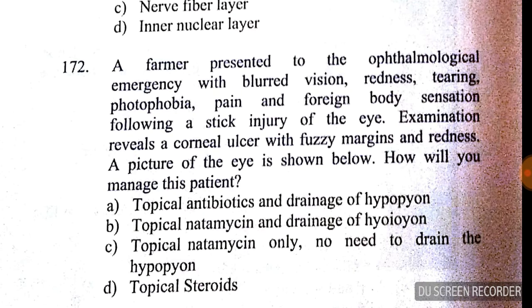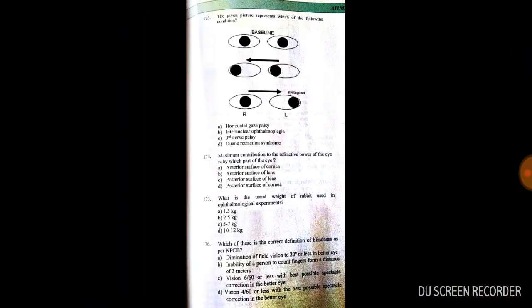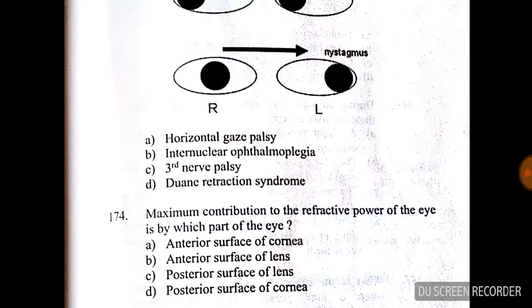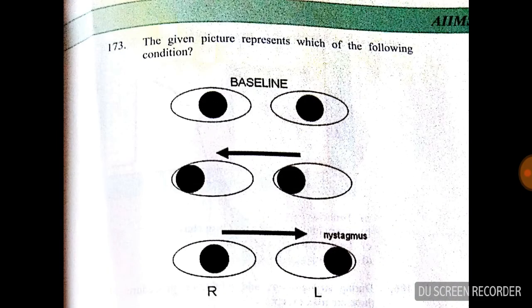Question number 172: a farmer presented to the ophthalmological emergency with blurred vision, redness, tearing, photophobia, pain, and foreign body sensation following a stick injury of the eye. Examination reveals a corneal ulcer with fuzzy margins and redness. How will you manage this patient? Option C is correct — topical natamycin only; no need to drain the hypopyon.